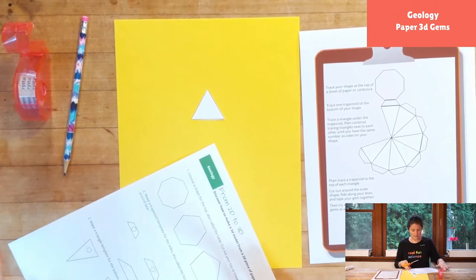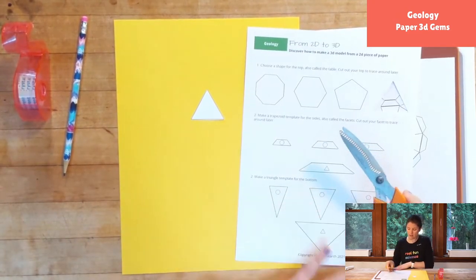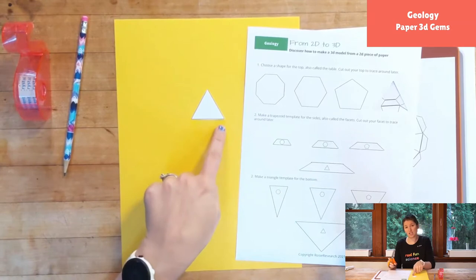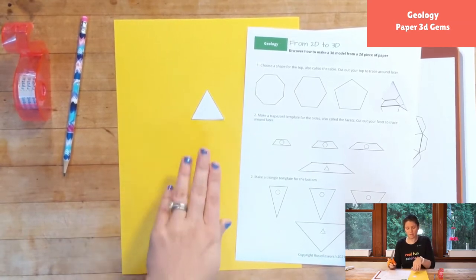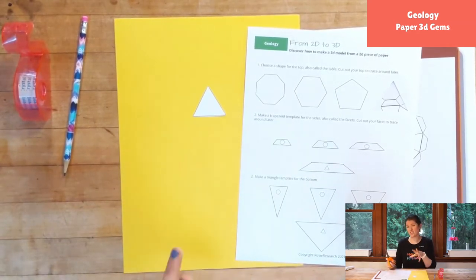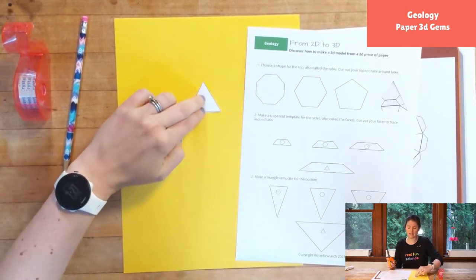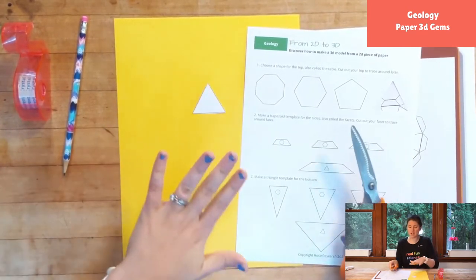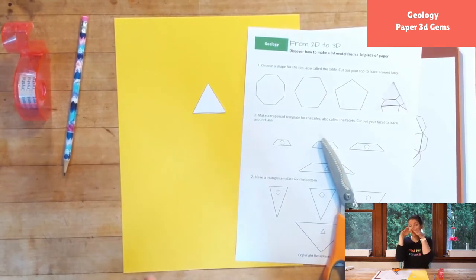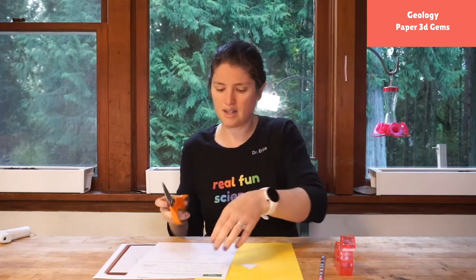And the next piece is you're going to make a trapezoid where the smaller part is at your triangle and the larger part is going to be towards the other triangles that make your bottom. This is the table, the top of the gem that would be at the very tippy top, and our trapezoids are going to make that angled part and then we'll have some other triangles that come down.